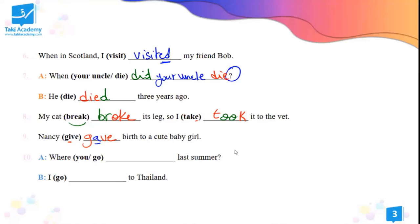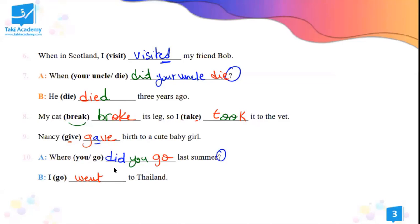Where you go last summer? — question. It's a question so we definitely need the auxiliary verb 'did'. Where did you go? The answer is: I went to Thailand.